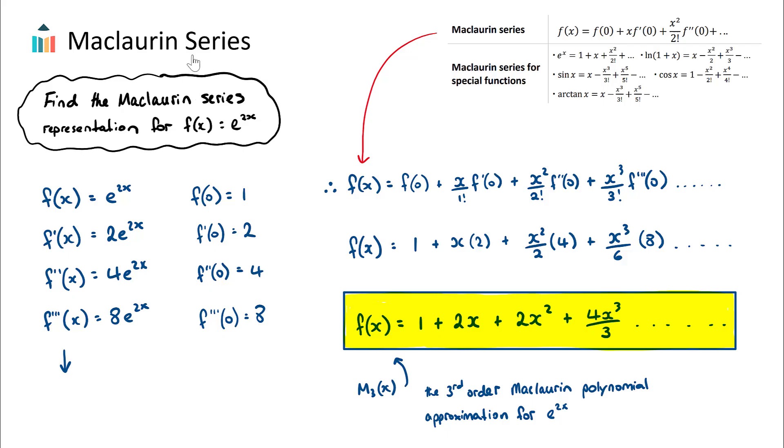I'll take you through the steps here of the Maclaurin series. What we want to do is look at our function and find the Maclaurin series representation of the function e to the 2x. Let's write this down: f of x is e to the 2x.